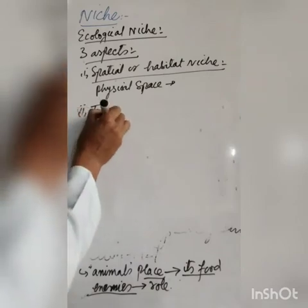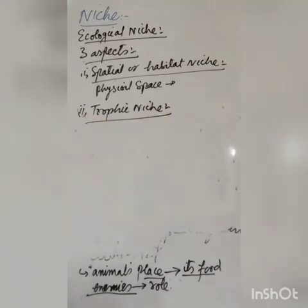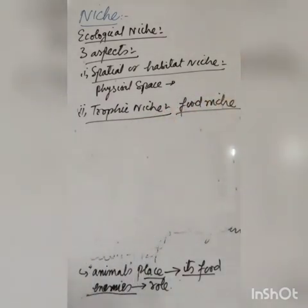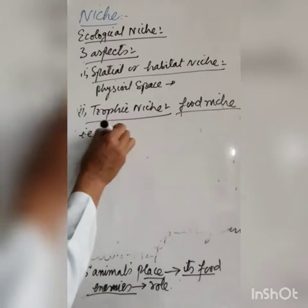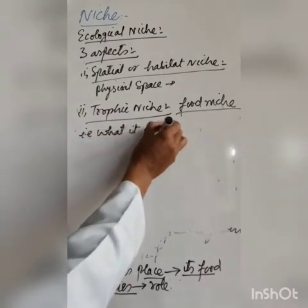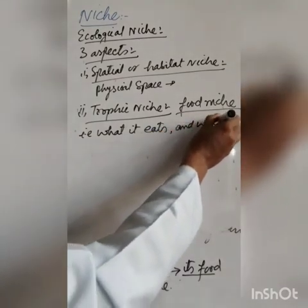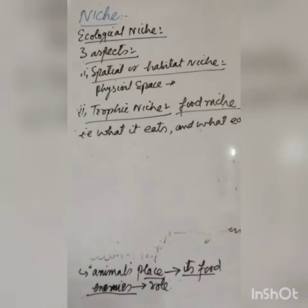The second aspect is called the trophic niche. It denotes the functional position of an organism in its habitat or ecosystem — summarized as what it eats and what eats it.